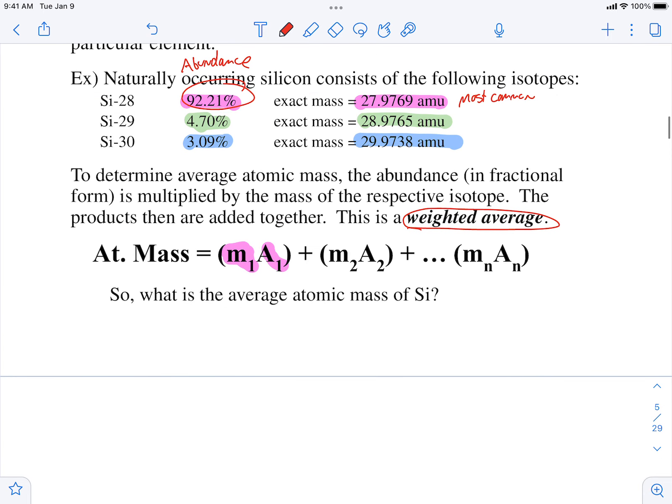Okay, so watch. The first mass, 27.9769. 92.21, I want to use that in decimal form. So all of those percentages, you divide them by 100% because we need them in decimal form. So 0.9221. And if we calculate, we're going to get 25.79749949.